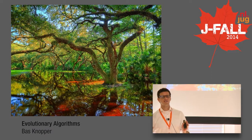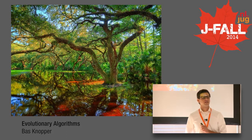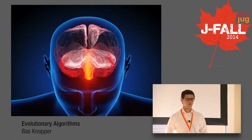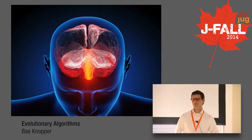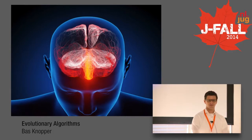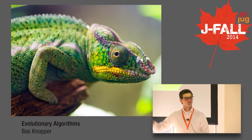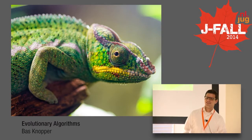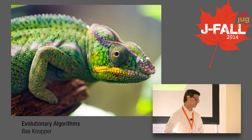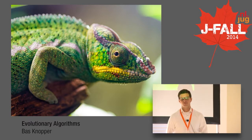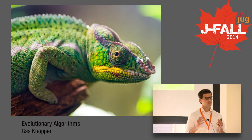Nature has always been a great inspiration for engineers and software engineers like us. I can name two great examples: the first one would be the human brain, which invented the wheel, created the Roman Empire, and developed Java. The second one would be evolution, which in turn created the human brain and also made sure that this little feller can hide in its surroundings because it has a trait to change colors.